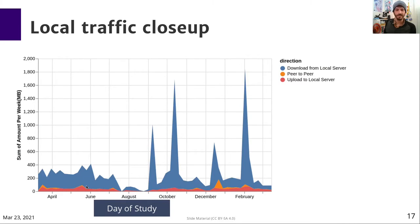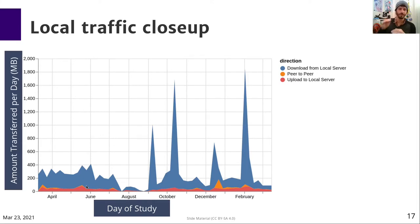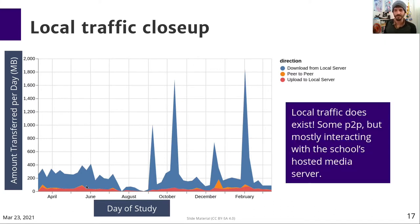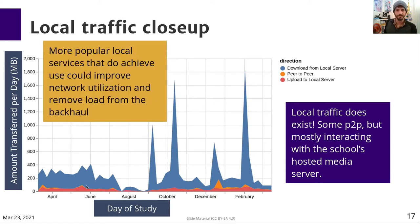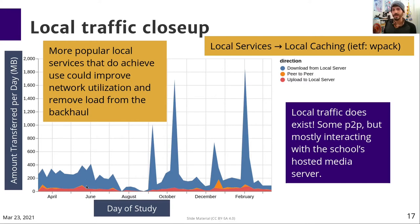If we zoom in on these local services, this chart shows the same timeline but an order of magnitude smaller — in megabytes instead of gigabytes. We see that local traffic does exist; there's a tiny amount of peer-to-peer traffic, but most of it is interacting with the hosted media server. We think more popular local services that do achieve use could improve network utilization and remove load from the constrained backhaul. We also think it's important to consider how local services could become more web-friendly by moving toward local caching, which is difficult in the HTTPS world, though there's ongoing work at the IETF examining these trade-offs.